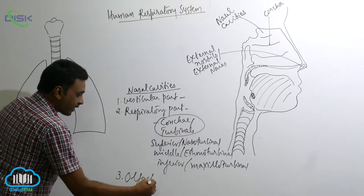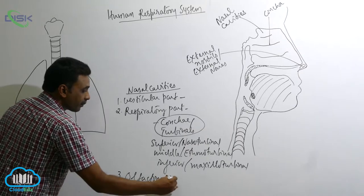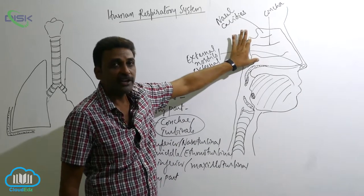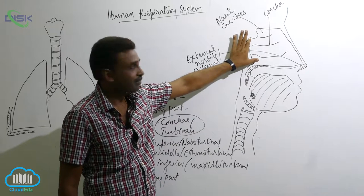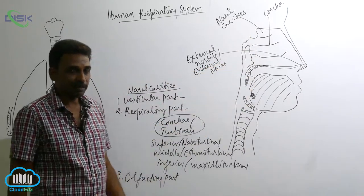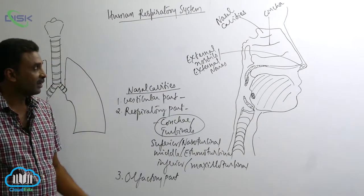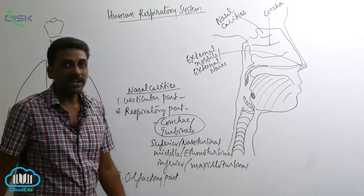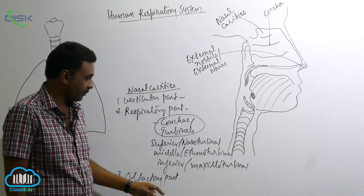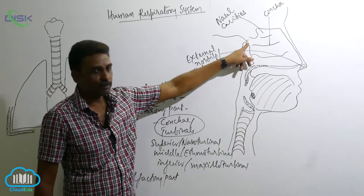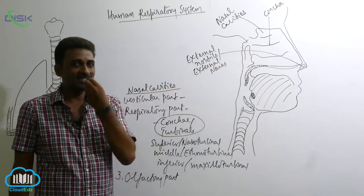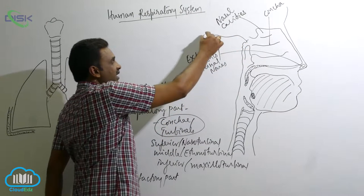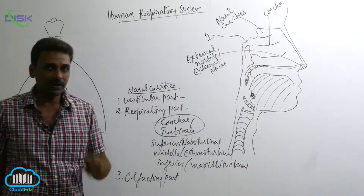The last part is the olfactory part, located toward the terminal region of the nasal cavity. From the olfactory part originates cranial nerve number one — the olfactory nerve. You can see the olfactory epithelium there. From that sensory epithelium originates cranial nerve number one, which goes to the brain.